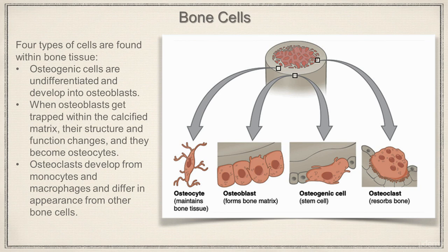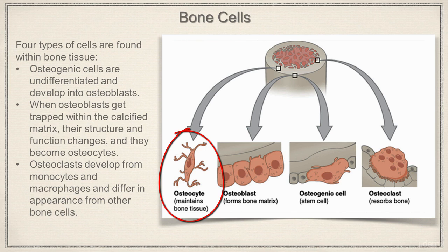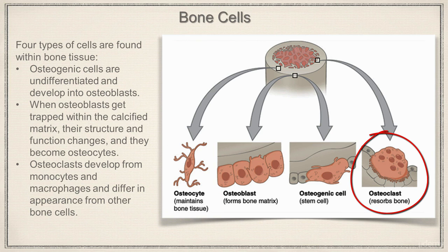In this lecture we're going to look at bone cells. There are four different types of cells found within bone tissue. First we have the osteogenic cells, which are undifferentiated and will develop into osteoblasts. When osteoblasts get trapped within the calcified matrix, their structure and function changes and they become mature osteoblasts — at that point we call them osteocytes. Osteoclasts develop from monocytes and macrophages and differ in appearance from the other bone cells.